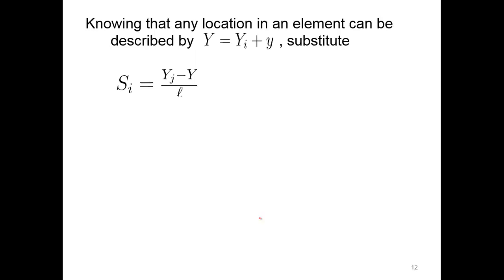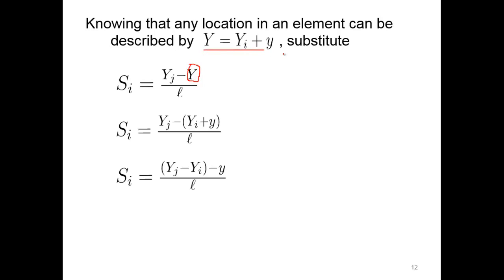We can substitute that into our shape function. Here's the original shape function with the length of our element. Substituting for the y variable — the location at any point within our element — we get y sub j minus y sub i in the numerator, which is the same as the length L. So we substitute in L and get (L minus y) over L for Si. We do the same for the shape function at node j, substituting for y and collecting terms. The yi terms cancel out, leaving us with Si equals 1 minus y/L, and Sj equals y/L.